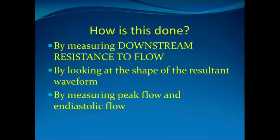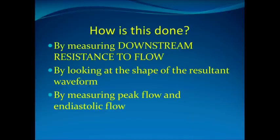How is it done? It's by measuring the downstream resistance to flow — we're looking at what is actually going on in the placenta. The placenta should be a very free-flowing system, and if there is any resistance, it is reflected in the cord with the Doppler we apply. If there is resistance to flow, that will be indicated by the shape of the resultant waveform. We measure the peak systolic flow and the end diastolic flow, and those two measurements tell us whether or not there is resistance to flow within the placenta.